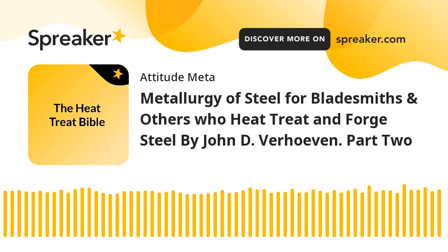Chapter 3: Steel and the Fe-C Phase Diagram. Steel is made by dissolving carbon into iron. Pure iron melts at an extremely high temperature, 2800°F (1538°C), and at such temperatures carbon readily dissolves into the molten iron generating a liquid solution.